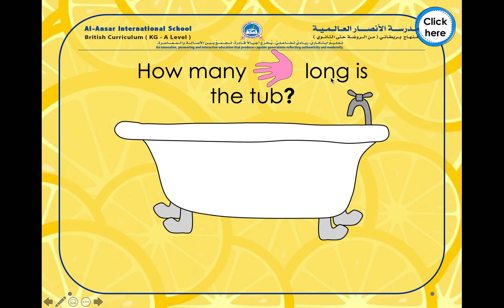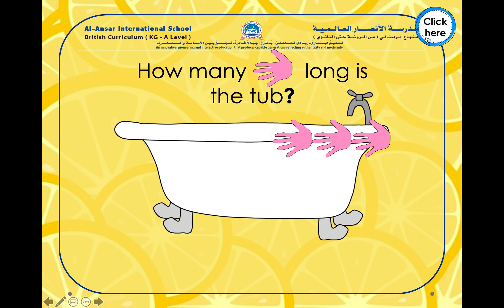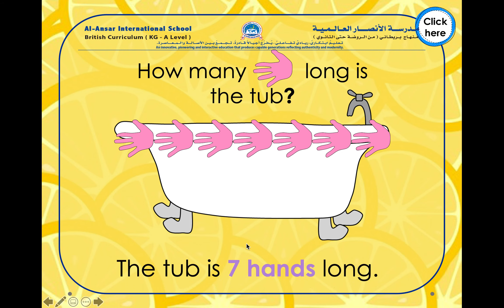How many hands long is the tub? Do you think we will use more hands than feet or less hands than feet? One, two, three, four, five, six and seven. The tub is seven hands long. It was four feet long but now it is seven hands long. Even though we used the same tub, when we measured using something different, we got different answers. The tub is more hands long than feet long.